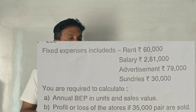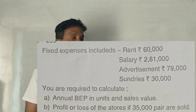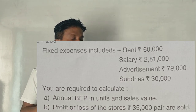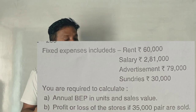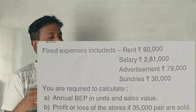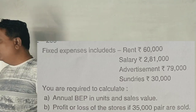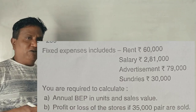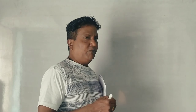You are required to calculate: annual break-even point in units, sales value, and profit or loss of the store if 35,000 pairs are sold. There are three questions — one main question and one sub-question.